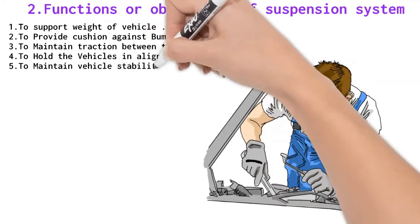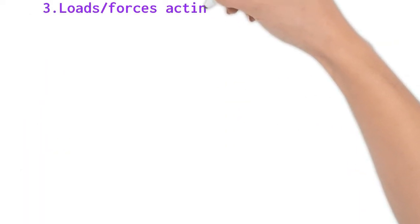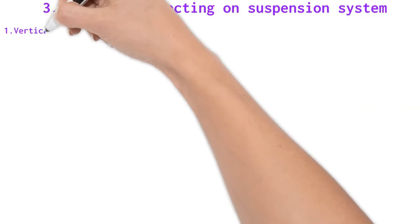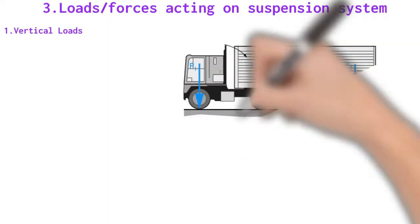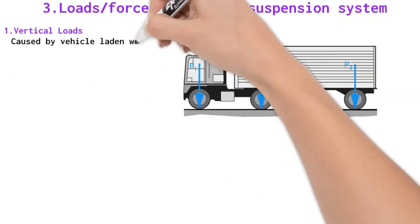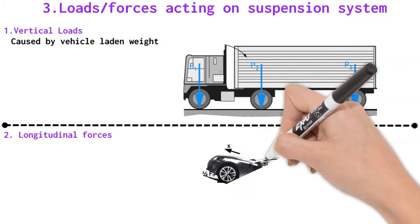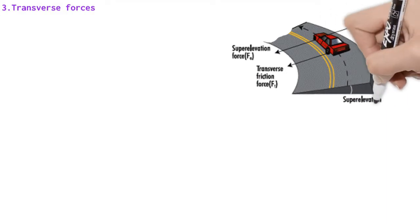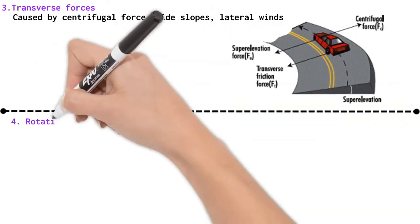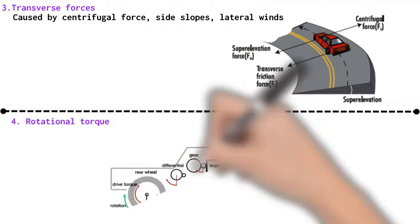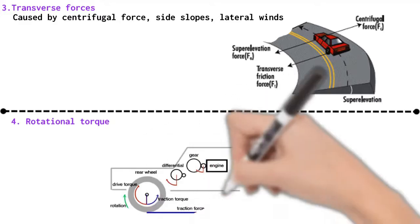Forces and loads which act on suspension systems are: vertical force caused by vehicle loading weight, longitudinal force caused by tractive and braking effort, transverse force caused by centrifugal force, side slopes, lateral winds, and rotational torque reaction caused by driving and braking efforts.